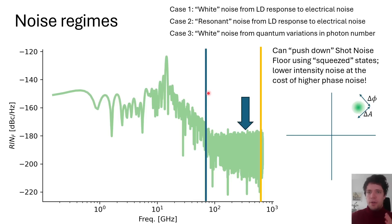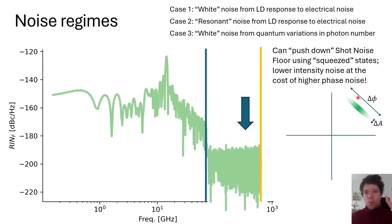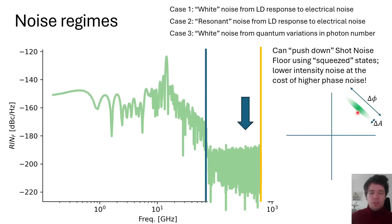With squeezed states, you can represent a quantum state of light on a 2D plane where the distance from the center represents amplitude (photon number) and the angle represents phase. Using clever experimental techniques, you can reduce variation in the amplitude direction at the cost of increased phase variation — lowering intensity noise while raising phase noise, or vice versa. These techniques are used in advanced experiments including gravitational wave detection. I hope you found this video on relative intensity noise interesting — feel free to check out my other videos, and stay tuned for more.